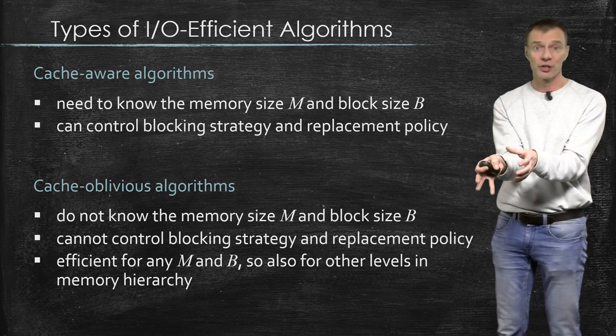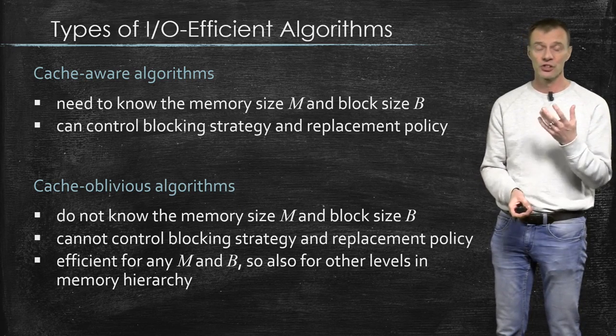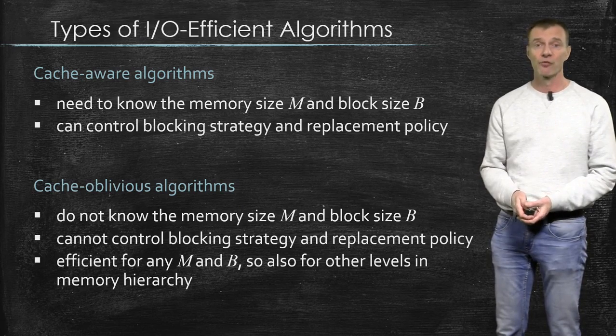But then if your B is different on a different level of the hierarchy, it doesn't work. So these cache-oblivious algorithms have a lot of advantages.